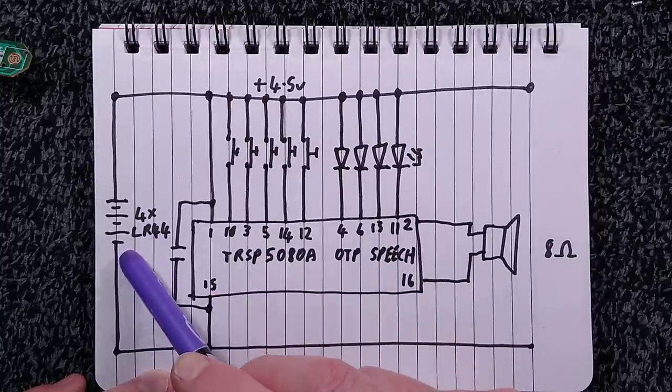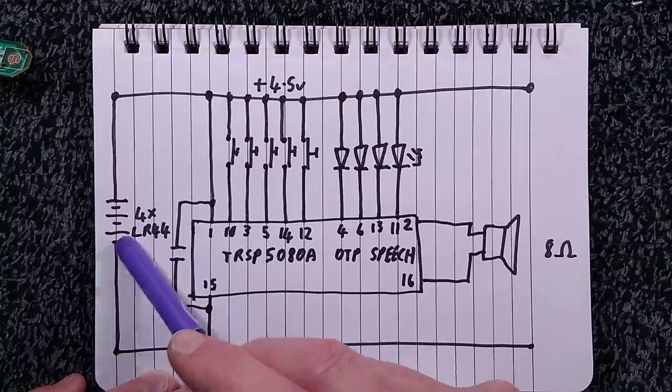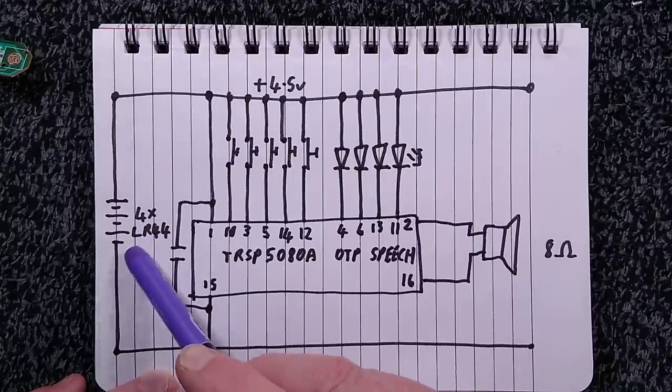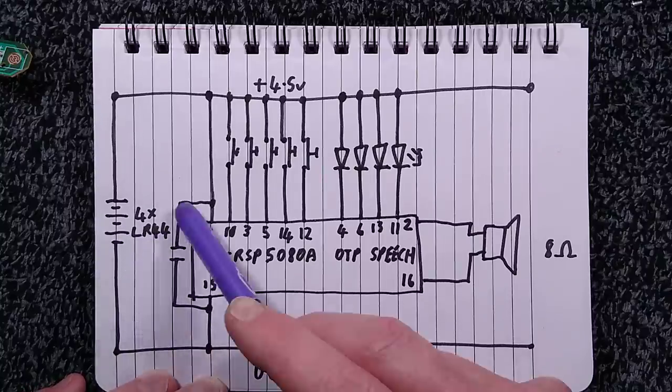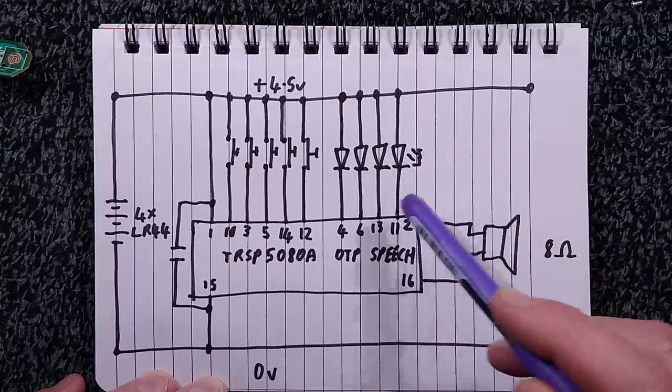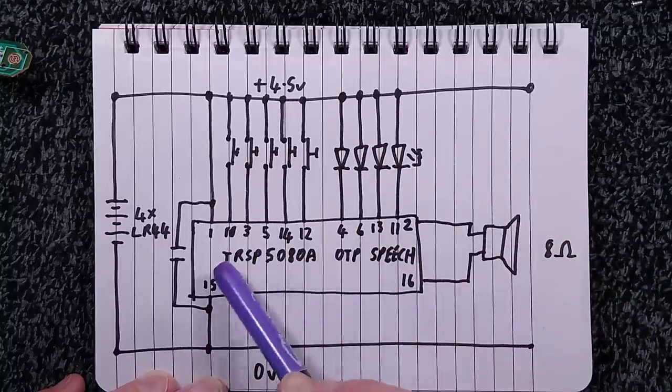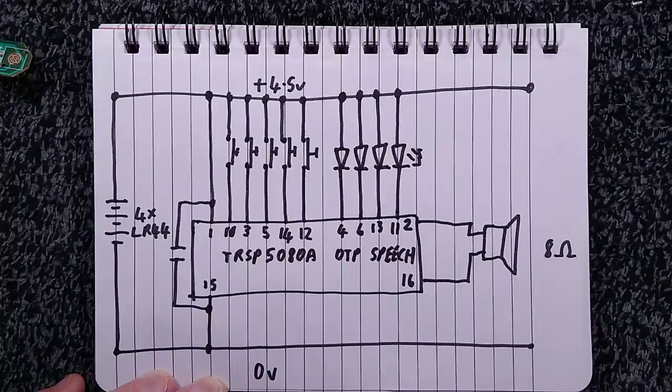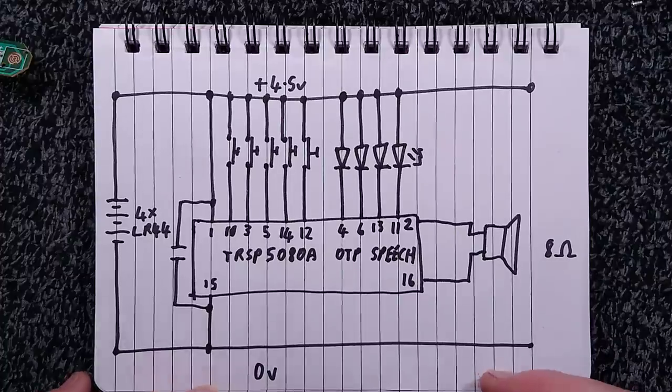So it's got the stack of three LR44 cells, the little alkaline button cells. It's got the decoupling capacitor, the chip itself, the speaker, four LEDs, and five buttons assigned to these pins. That is it. It's a very minimalist design. I wonder if this is used for greetings cards and things like that.